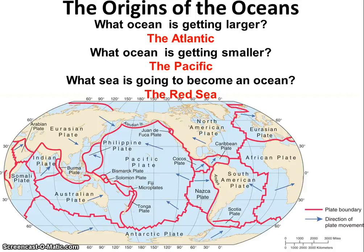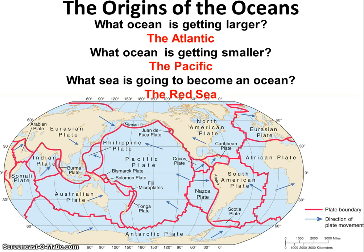Just because the oceans formed doesn't mean they've stopped forming. This entire motion happens at about the rate at which your fingernails or hair grow. So next time you clip your fingernails, just think — that's how much closer you are to Japan. In about 200 to 300 million years, there will be no more Pacific Ocean. The west coast of America is going to slam right into the east coast of Asia — and at that point, California will have the best sushi in America, but that's 150 to 200 million years from now.